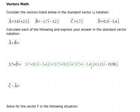When I multiply those two, I get the 1.11 i-hat. And when I multiply these two, I get negative 19.98 j-hat.